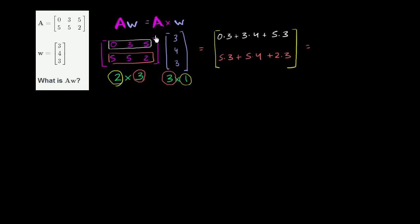And this is going to simplify to - this top term, this is a 0. This is 12 plus 15, which is 27. And then the second term, this is 15 plus 20 plus 6. So let's see, this is 35 plus 6 is 41. So it's a column vector, two rows, 27 and 41.